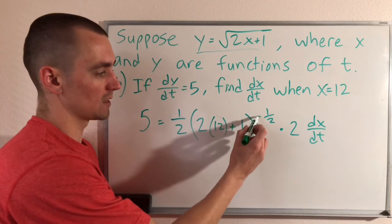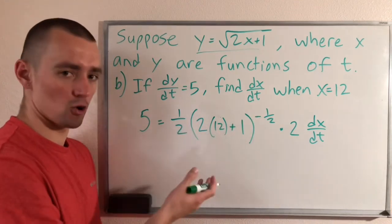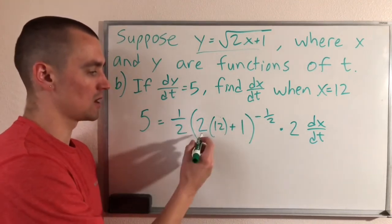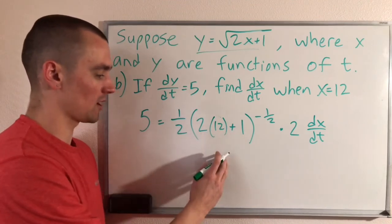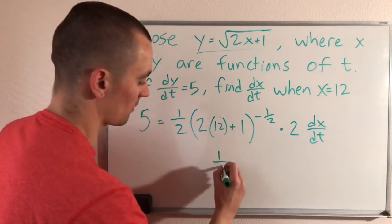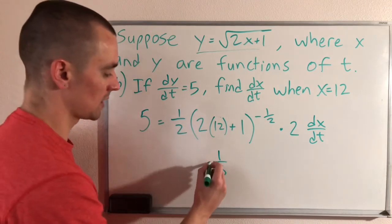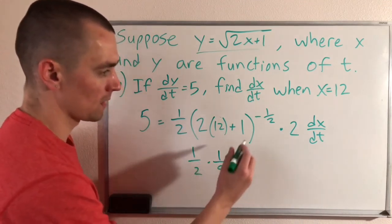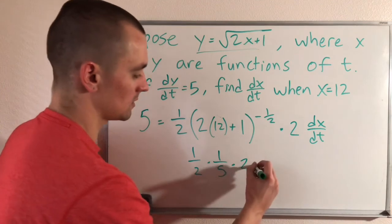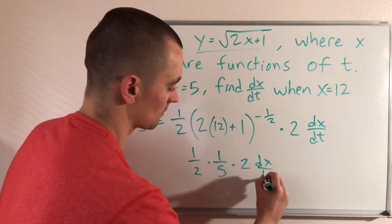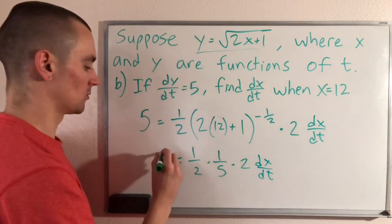And remember, taking the negative 1/2 power is the same as doing 1 over the square root of all that. So 1 over the square root of 25 is 1 over 5 times 1/2 times 2 dx/dt. And all that equals 5.